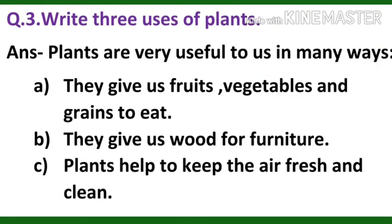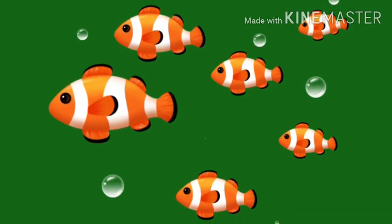Question number 3: Write three uses of plants. Answer: Plants are very useful to us in many ways. Number A: They give us fruits, vegetables and grains to eat. Number B: They give us wood for furniture. Number C: Plants help to keep the air fresh and clean. Hope you got well with the question answers. Children, revise it.